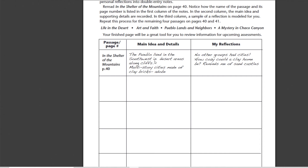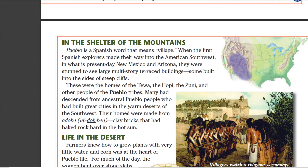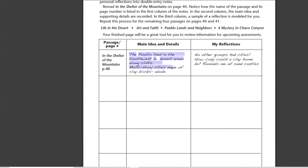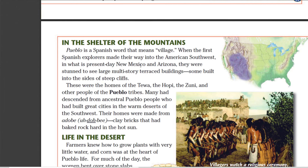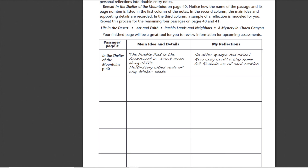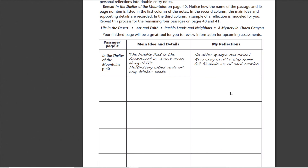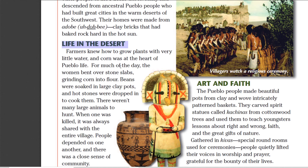This is the important part. We document what we're talking about and then what the main idea is and details. So if we look at it here, you can see that we read this passage right here, and then we write: 'The Pueblo lived in the southwest and desert areas along cliffs, multi-story cities made of clay bricks — adobe.' So that's what we're putting here. We're talking about where they lived and how they lived. And then the next thing we're going to put is 'life in the desert,' page 40, and then we would read this part and write down the main idea and details and any reflections. It's pretty simple. It doesn't have to be groundbreaking notes, just something that you think is the big idea.